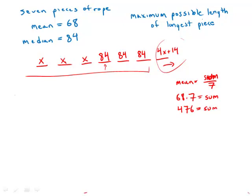So x plus x plus x, 3x, plus 84 plus 84 plus 84. And 84 times 3, a little bit of multiplication, we find that is 252. So 3x plus 252 plus 4x plus 14 equals 476.